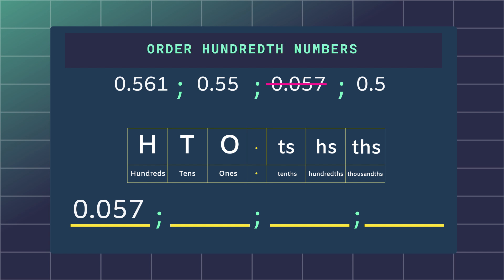Let's go on to the hundredths place. This will be the second number after the decimal point. 0.561, 0.55, 0.5.